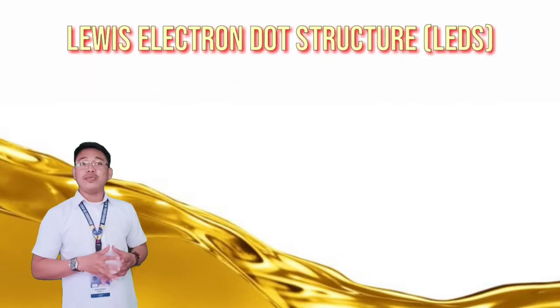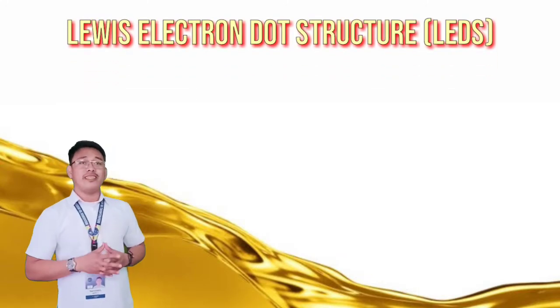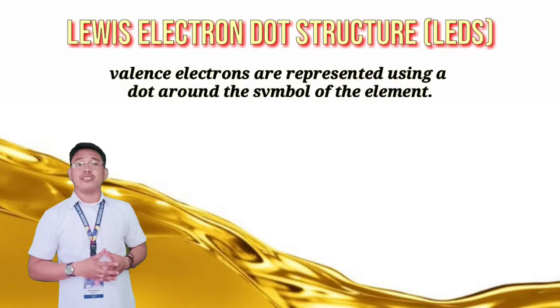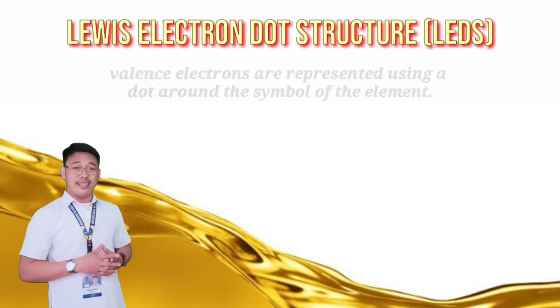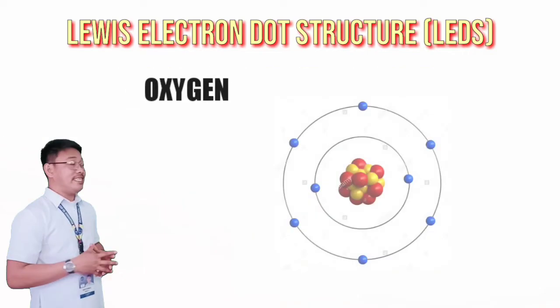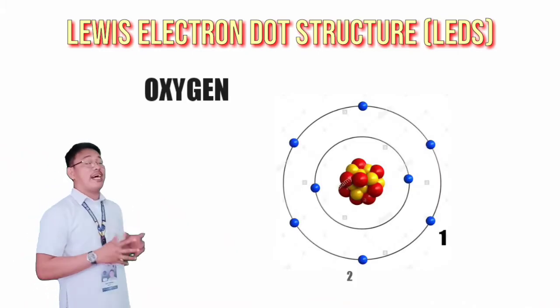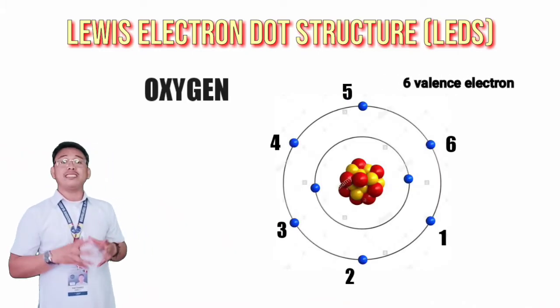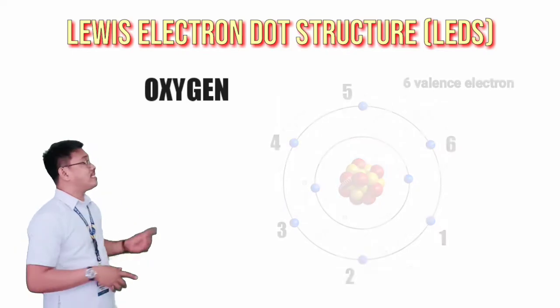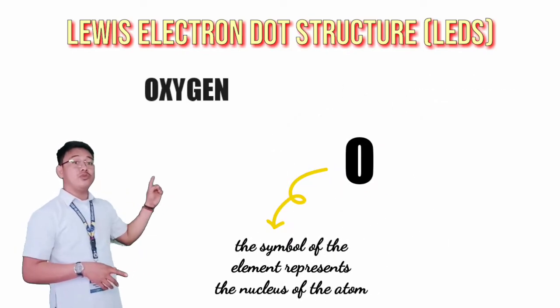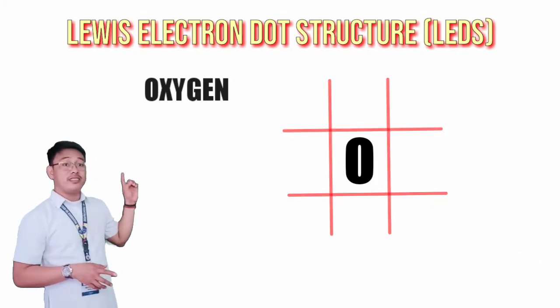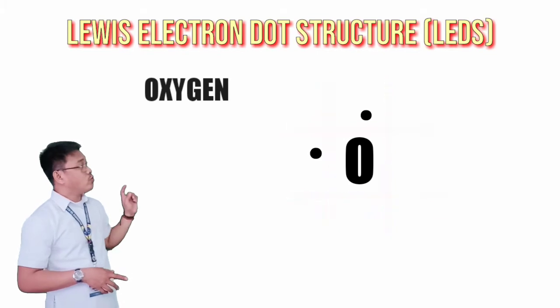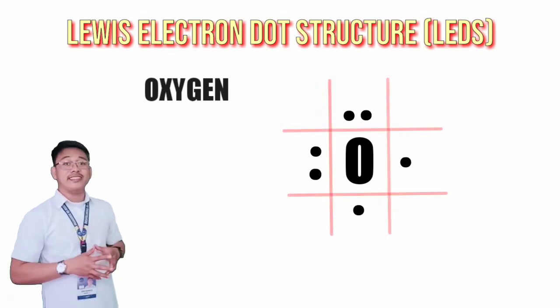Let's start with the Lewis electron dot structure. When you were in grade 9, you studied the Lewis electron dot structure where the valence electrons are represented using a dot placed around the chemical symbol of the element. Let's use oxygen as an example. Oxygen has six valence electrons. In writing the Lewis dot structure, imagine that the symbol of the element which will represent the nucleus of the atom has four sides. Then, we simply distribute the dots: one, two, three, four, five, and six.